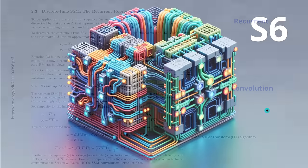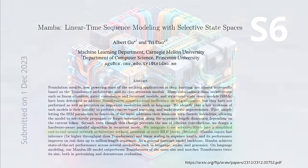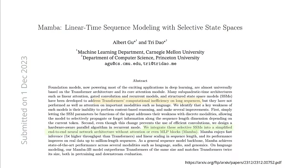Now let's jump to S6, the latest step in the evolution of state space models, and here we have Mamba. Mamba is equal to S6 — linear time sequence modeling with selective state spaces, from Princeton University and Carnegie Mellon University.